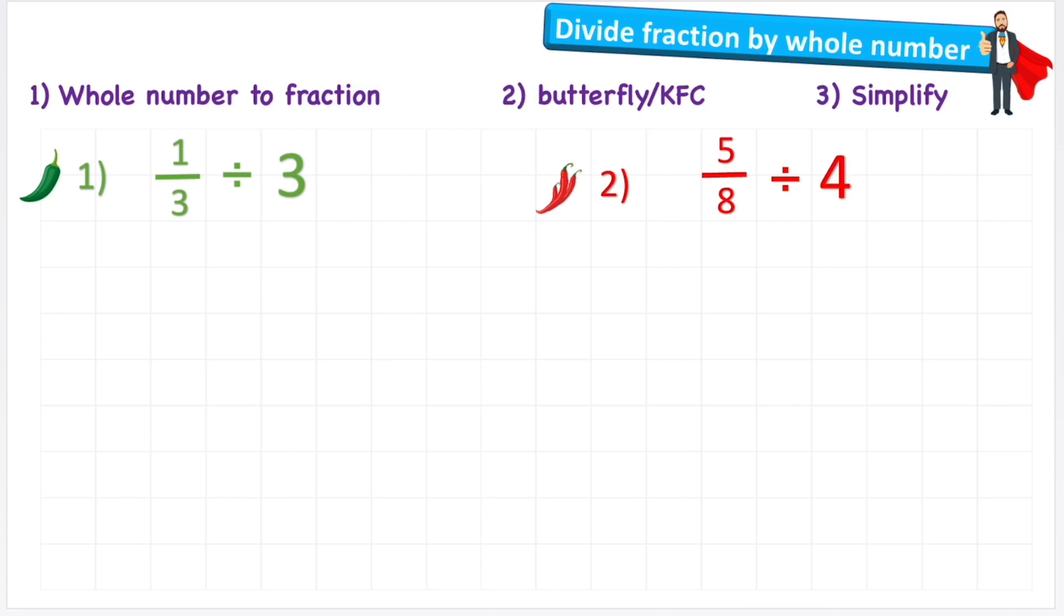You can see here that we have two questions, both of which have a fraction that we're going to be dividing by a whole number. So if we're going to follow our steps, we're going to first convert our whole number to a fraction. Then we're going to use either the butterfly or the KFC method, and then we're going to simplify if needed.